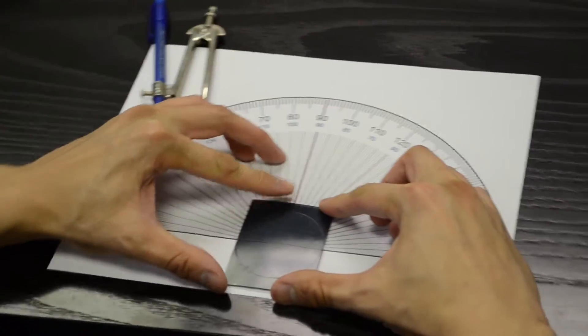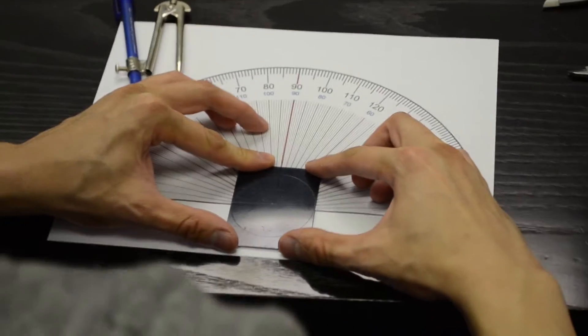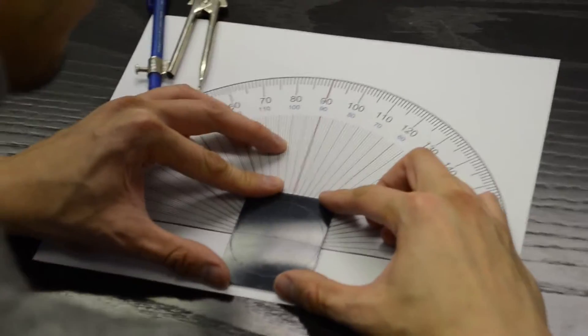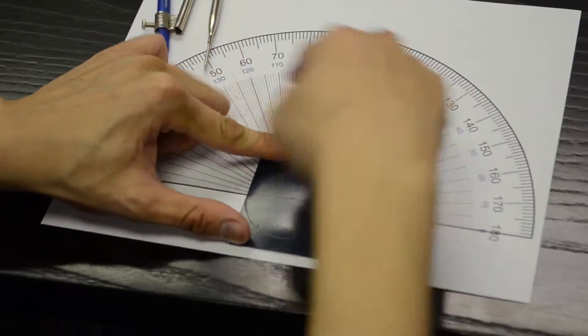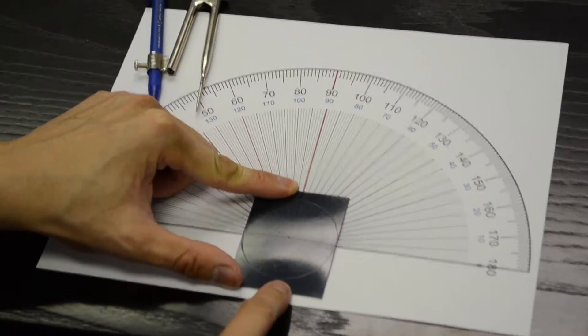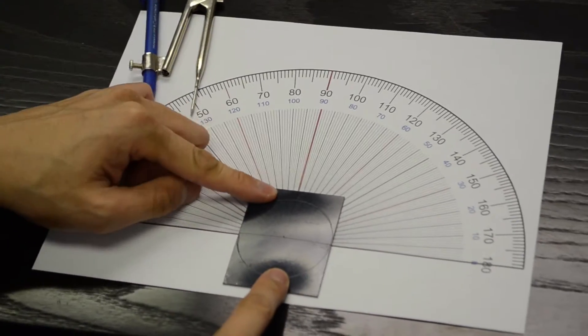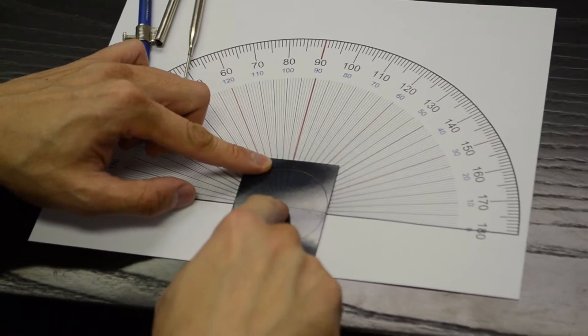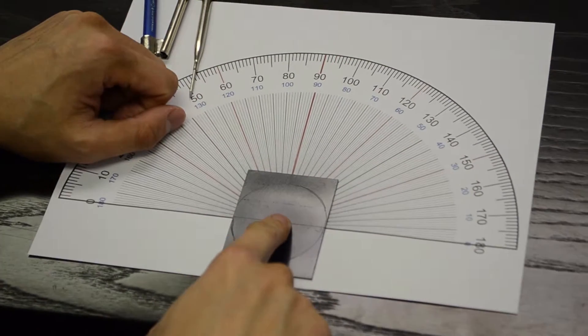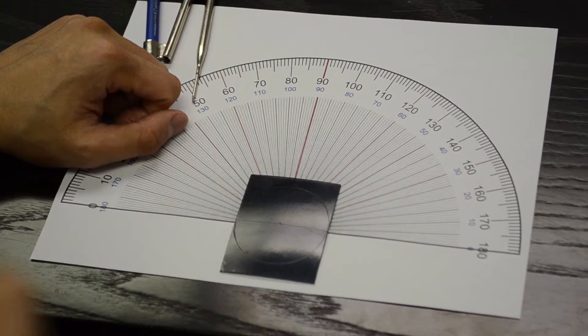From here, what you would do is line up the lens to the actual protractor that we've printed out. Now this lens is actually really nice because I'm actually using a 2 base lens and it's quite thin. So if I press down on it, I can actually get it flat and it's nice and comfortable.